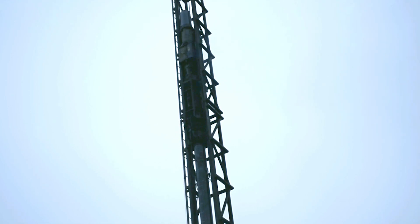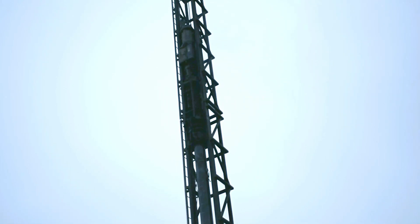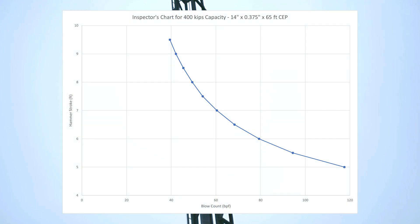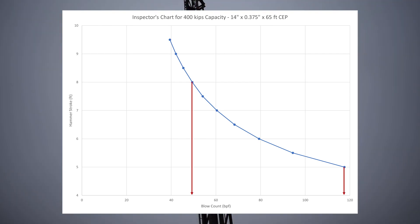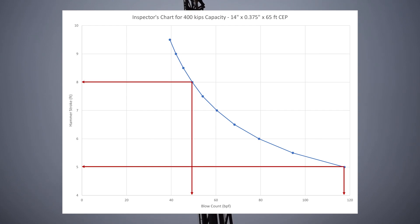Establishment of a driving criteria is only meaningful if it is correlated to an energy setting on the hammer, or in the case of diesel hammers, a stroke setting. Note the inspector's chart created in GRL WEAP. The 14-inch pile being driven by a Delmeg D3032 hammer shows a required blow count of 118 versus 50 blows per foot for respective hammer strokes of 5 and 8 feet for the capacity of 400 kips.